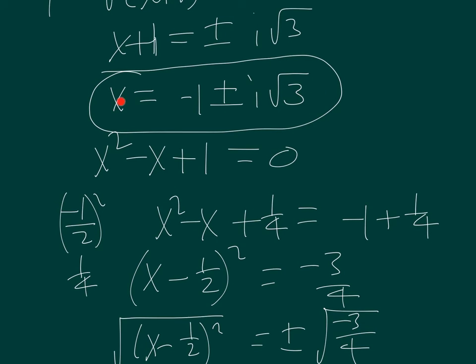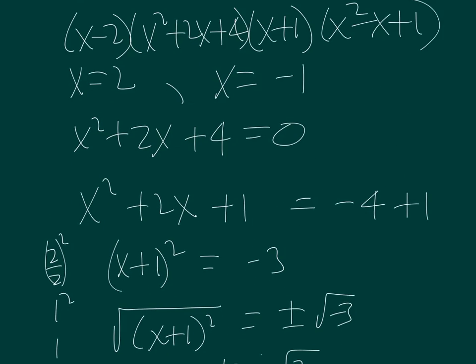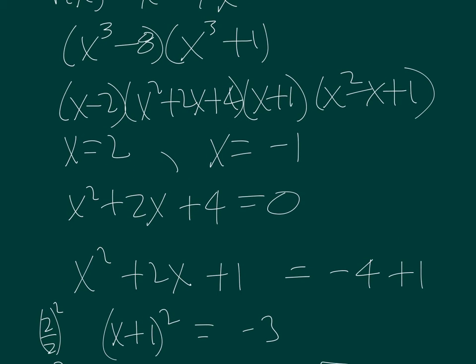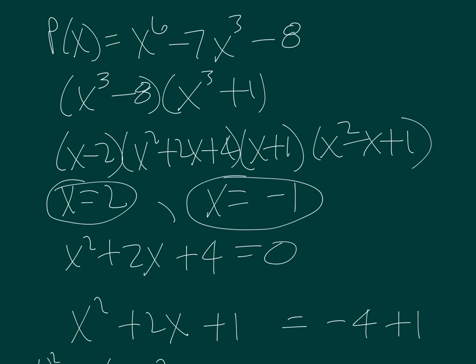Two roots here minus one plus or minus i root three, and two roots here, which accounts for all six of the roots that we should have with a sixth degree polynomial.